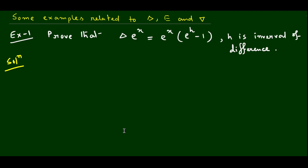Hello everyone, welcome back. In this particular video we'll do some examples related to finite difference operators: the forward difference operator, shifting operator, and backward difference operator. I have already explained in lecture one the different types of operators, their formulas, and what interpolation and extrapolation are. If you've gone through that video, we'll easily understand the problems here; otherwise, kindly go through lecture one first.